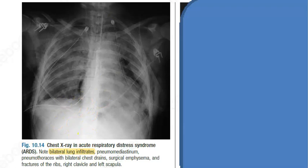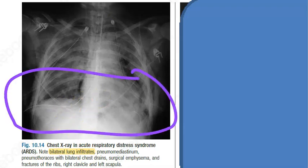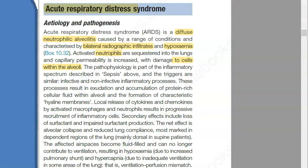The infiltrates are bilateral, as shown in the diagram. There is damage to cells within the alveoli — the alveoli are damaged. There are activated neutrophils and bilateral radiographic infiltrates. There is also hypoxemia — that is, less oxygen in the blood. Oxygen saturation is reduced, specifically arterial blood oxygen saturation.